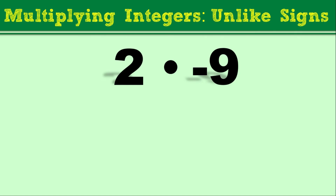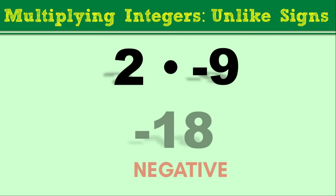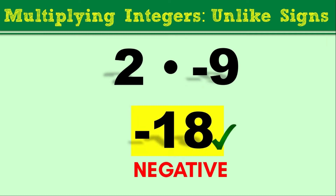How about when we multiply unlike signs? In our example, we have a positive integer multiplied to a negative integer — positive 2 multiplied to negative 9. Since they have unlike signs, the result will be a negative 18. So when you multiply unlike signs, the answer will be a negative integer.